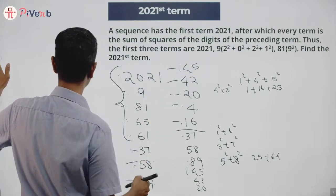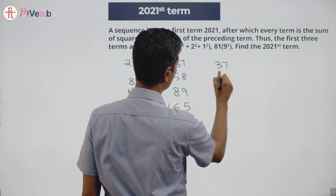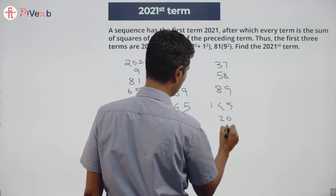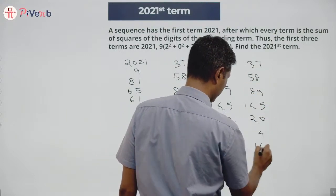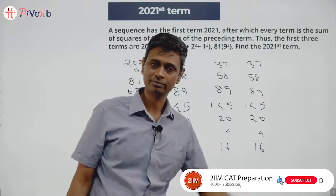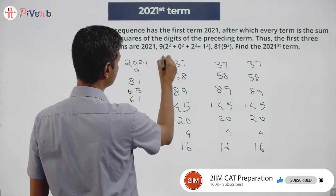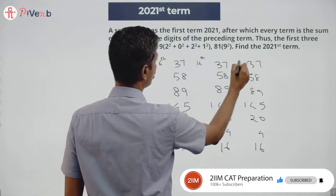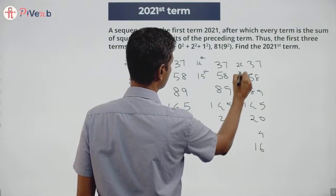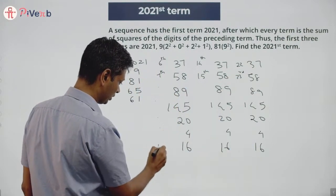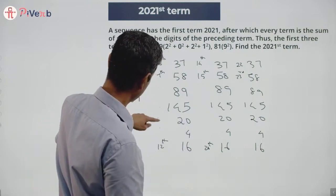42, 20, 4, 16. After this I'm back to 37, 58, 89, 145, 42, 20, 4, 16, 37, 58... I go in steps of 8, chunks of 8 come through. That's it, I'm done. So effectively I know my 6th number is this, my 14th number is this, 22nd number is this, 7th number is this, 15th number is this...